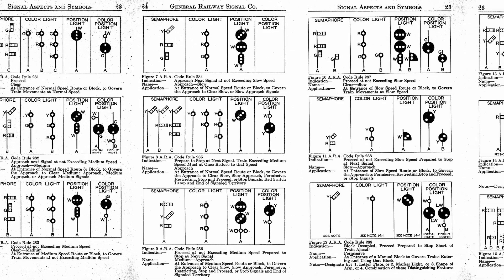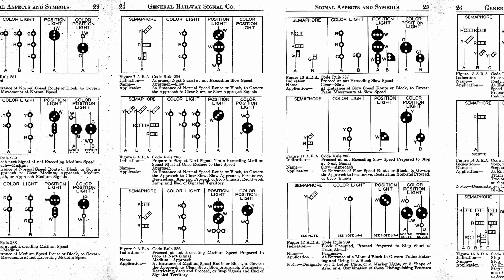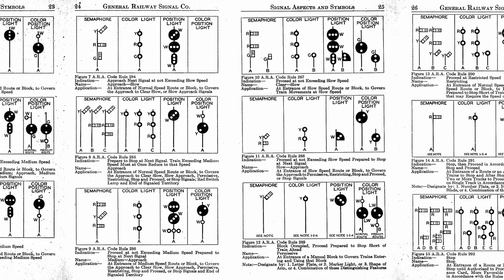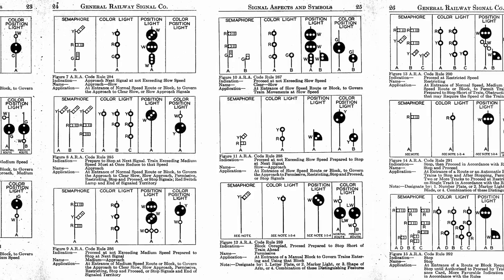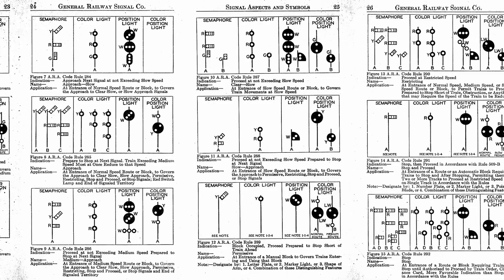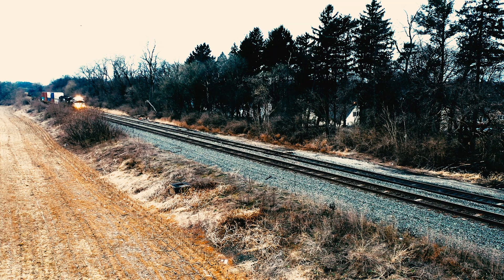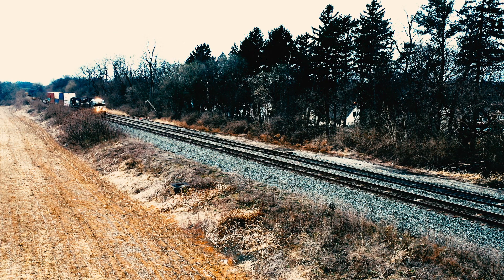Every signal has multiple states. We will probably release another video diving deeper into signals, but for Trainmon 5 purposes, red, yellow, and green are most important.